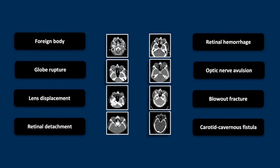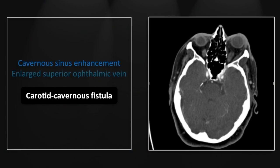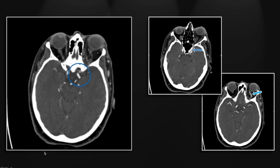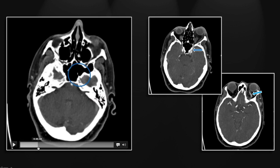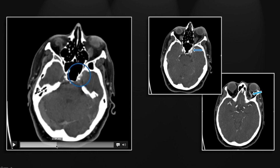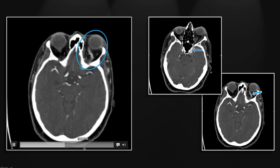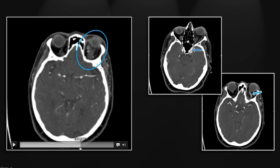The last case is a carotid cavernous fistula. Initially there is asymmetric cavernous sinus enhancement, and the first thing you'd want to check is the superior ophthalmic vein, which you can see is prematurely enhancing and significantly enlarged. Following the fistula, you can see contrast immediately adjacent to it filling the cavernous sinus, which then extends out into the enlarged superior ophthalmic vein — a very nice demonstration of a carotid cavernous fistula.